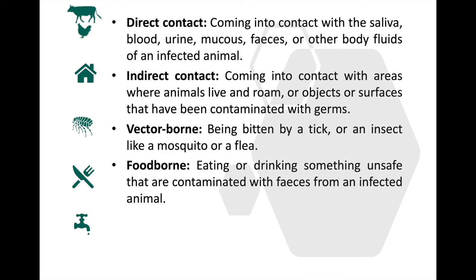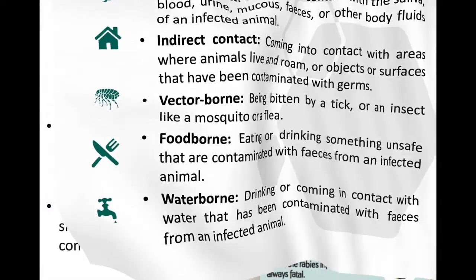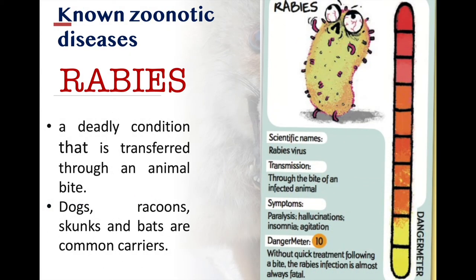Contaminated food can actually cause illness in animals and even to us people, including pets. Number five is waterborne — drinking or coming in contact with water that has been contaminated with feces from an infected animal. Let us now talk about some examples of the common zoonotic diseases. There are actually a lot of known zoonotic diseases from A to Z, but we will discuss just some here.